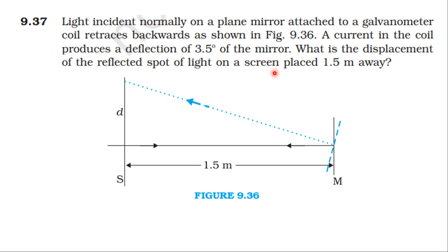The mirror moves from M to M dash. The mirror rotates 3.5 degrees from the normal line to a new position. By the law of reflection, angle of incidence equals angle of reflection. The angle between the incident ray and reflected ray is twice the angle of incidence. So 2 times 3.5 degrees equals 7 degrees.